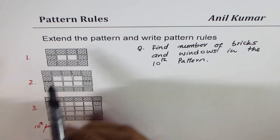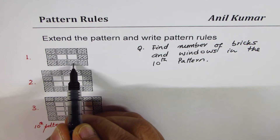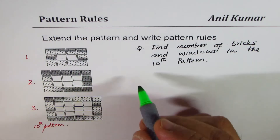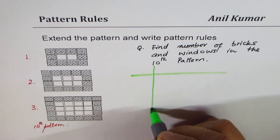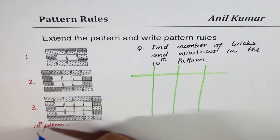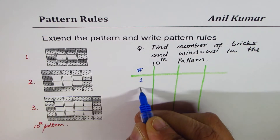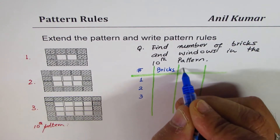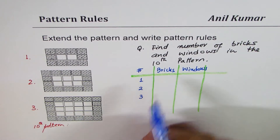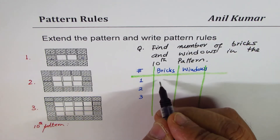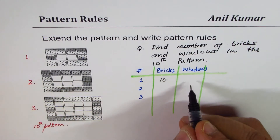We are calling these as the bricks. In the first case we have one, two, three, four, five, six, seven, eight, nine, ten — ten bricks and two windows. What we can do is make a table to understand how the pattern is growing since the size is increasing. So let's make a table with design number one, two, and three. In design number one, let's check how many bricks and how many windows we have.